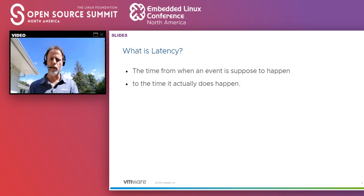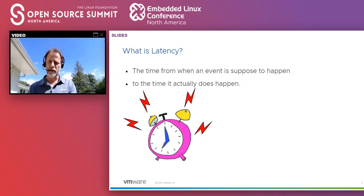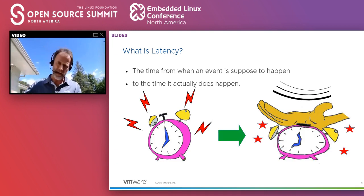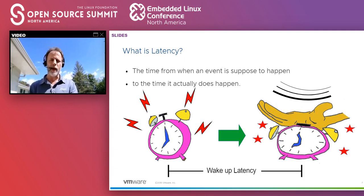In simple terms, I will call it the time from when an event is supposed to happen to the time it actually does happen. Simple case: every morning when you wake up, the alarm clock goes off — that's when you're supposed to wake up. Then by the time you hit the alarm clock, that is when you actually do wake up. I would like to call this wake-up latency.